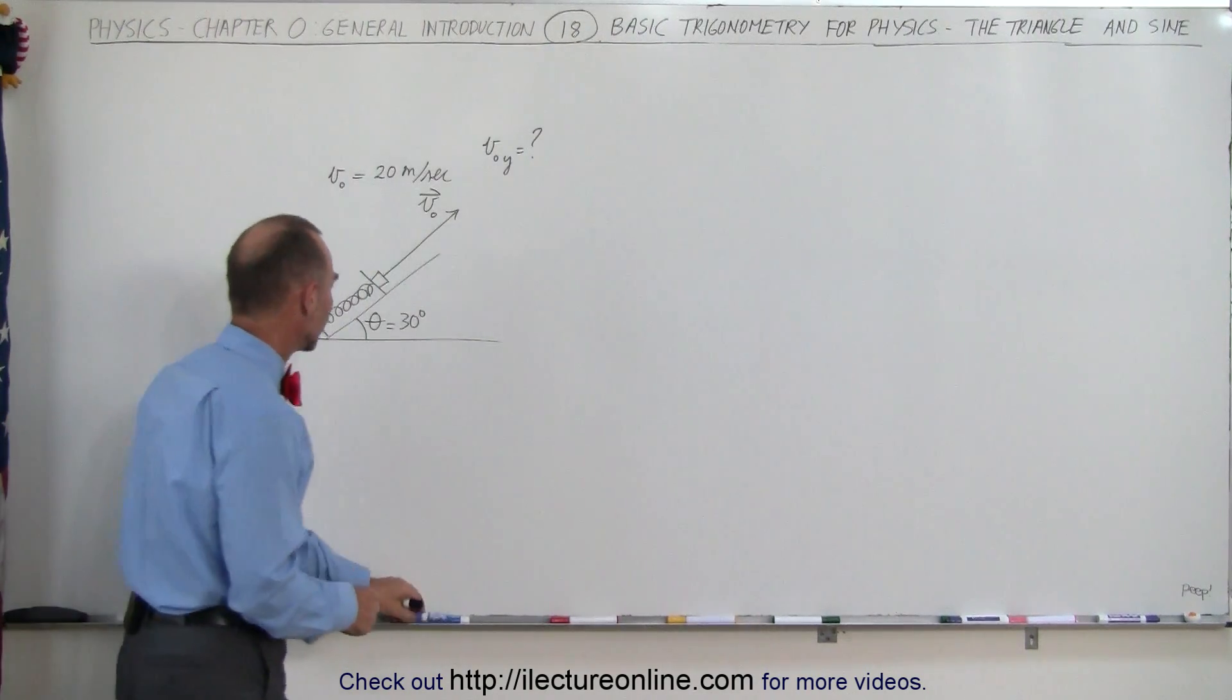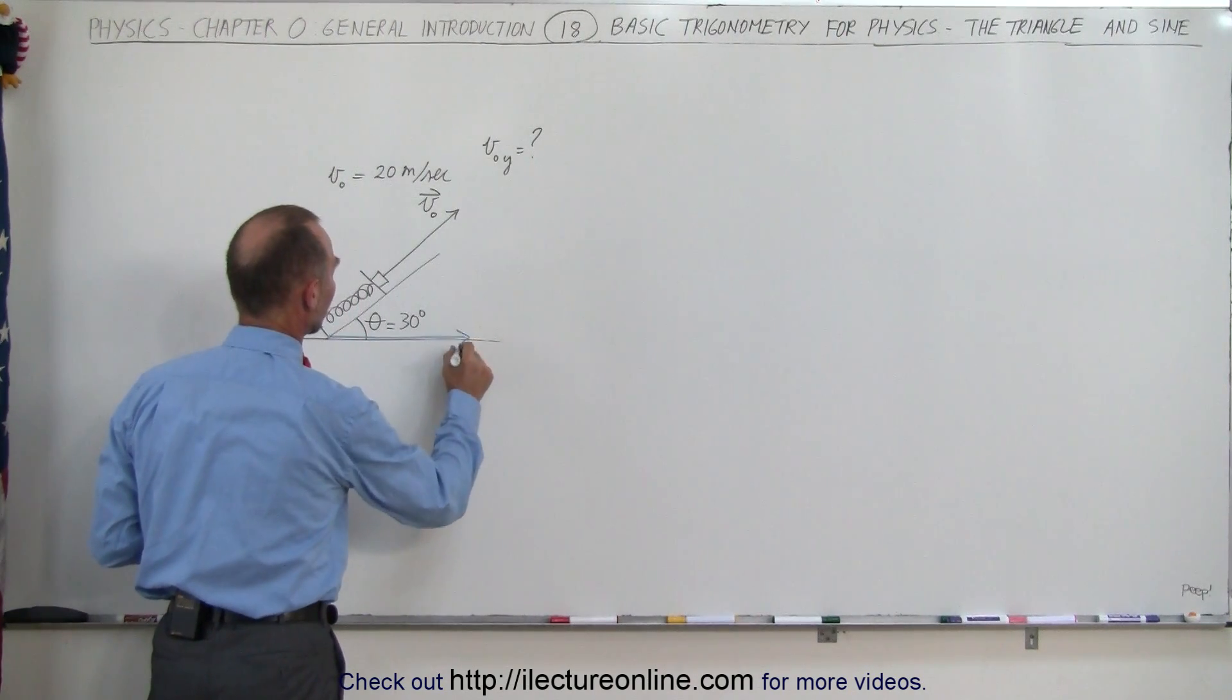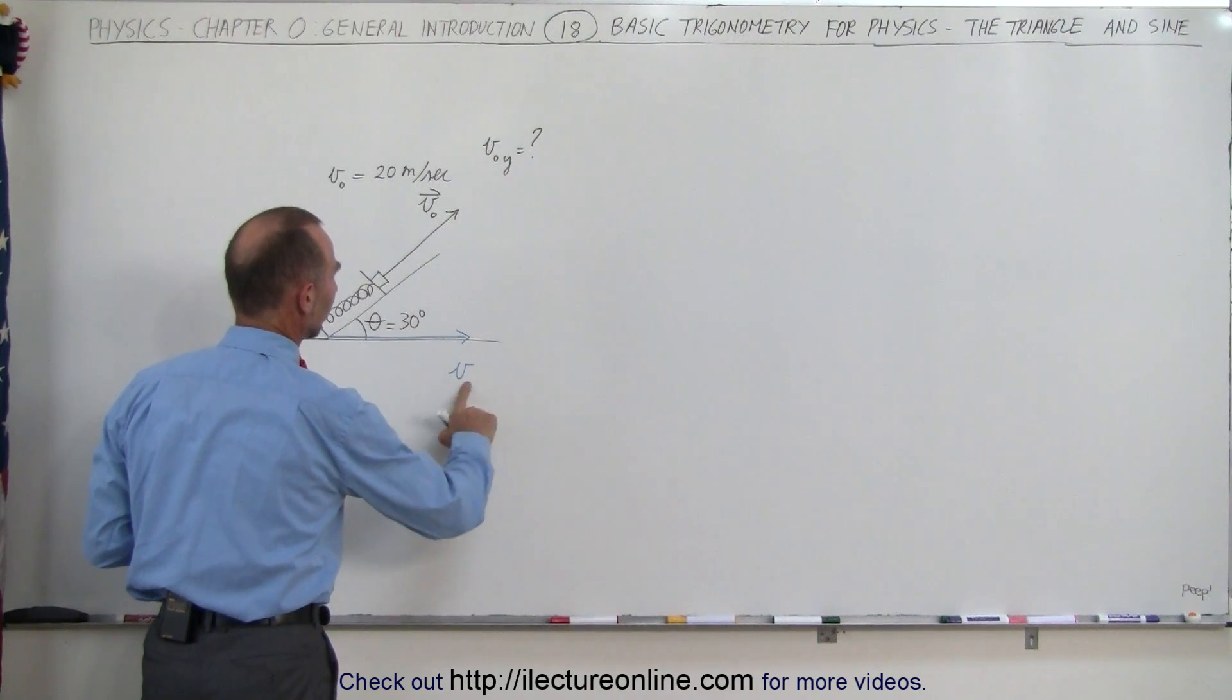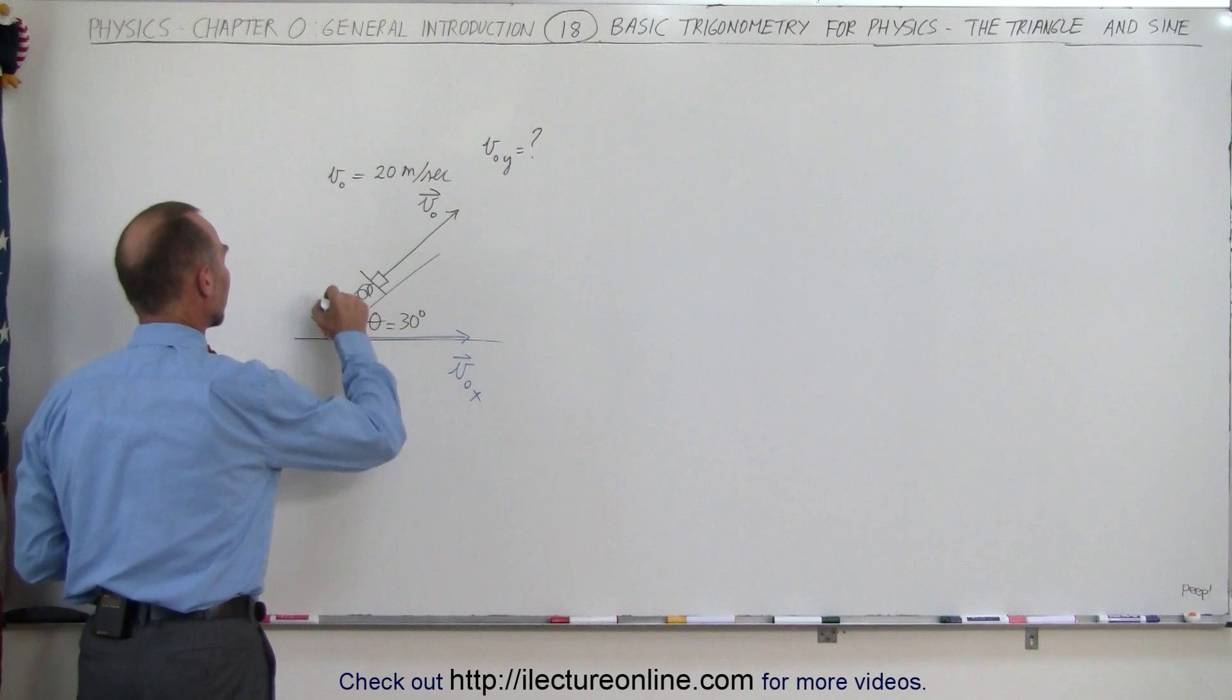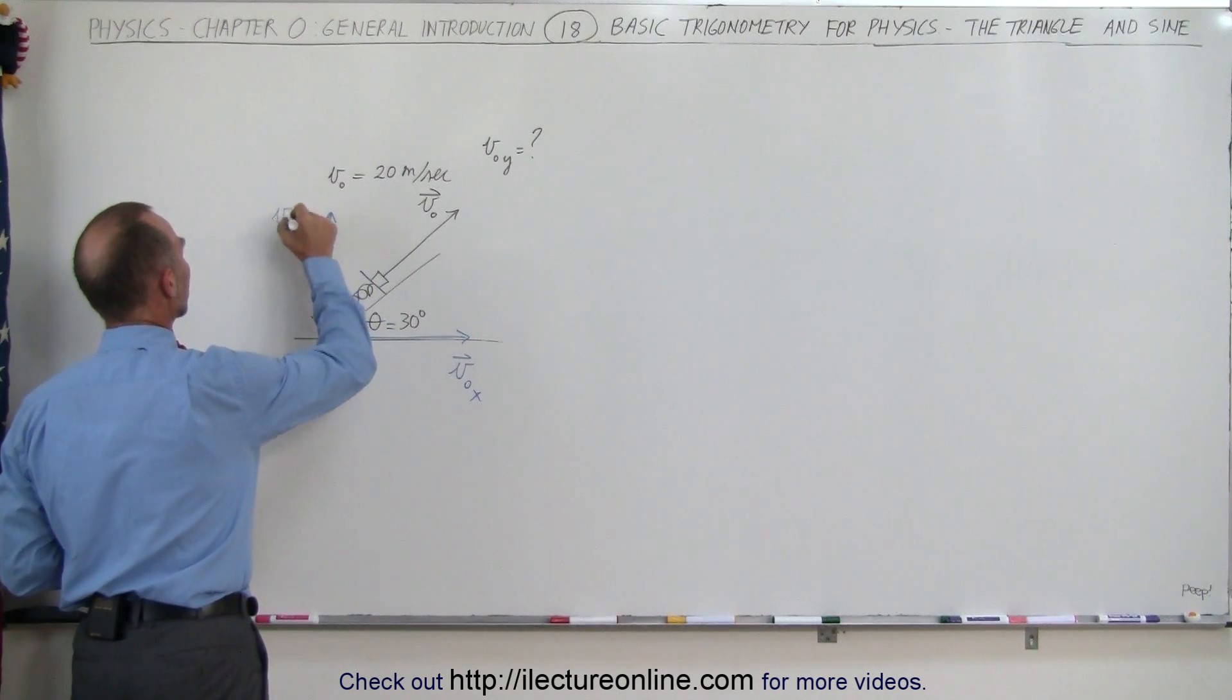So what we're going to do here is indicate that this here then represents the x component. So this would be v initial sub x. And then the y component will look like this. So that would be v initial in the y direction.